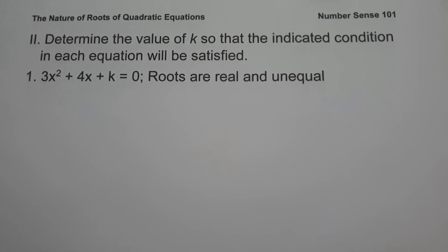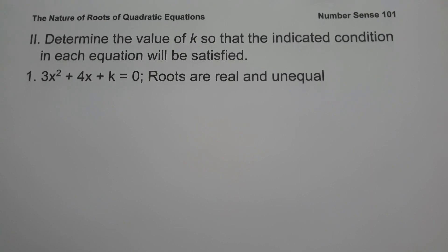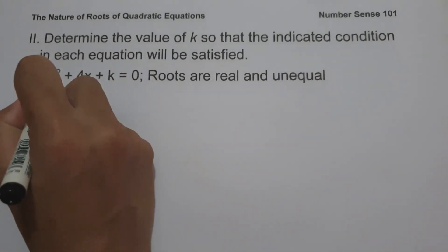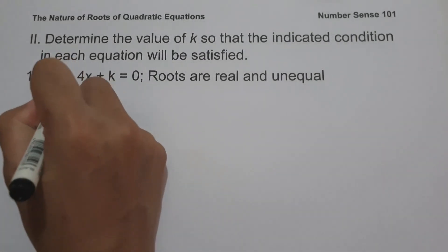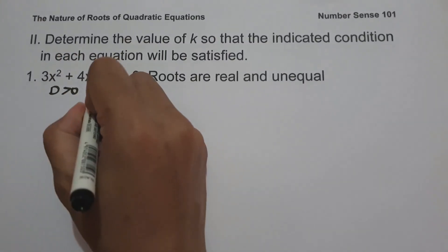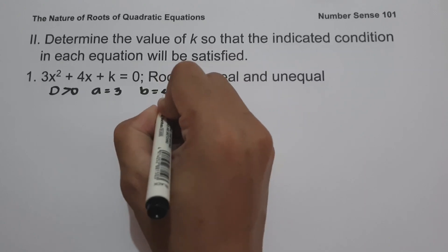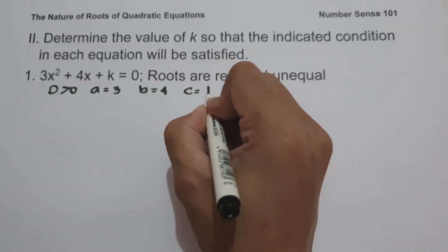On the second set of examples, we are going to determine the value of k so that the indicated condition in each equation will be satisfied. On number 1, we have 3x squared plus 4x plus k equals 0, where the roots are real and unequal. Since the roots are real and unequal, that means the discriminant is greater than 0. So the value of a is 3, b is 4, and c is k.